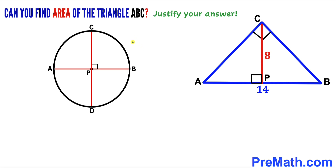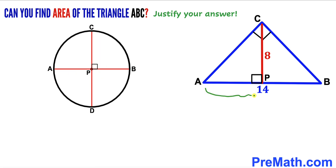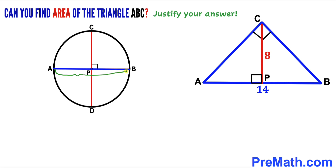Let's focus on a circle with center P, where the diameter of this circle is AB, and likewise CD is a diameter as well. In the given triangle, AB is 14 units, so the diameter AB is 14 units. In other words, the radius is 7 units, and likewise radius BP is 7 units as well.